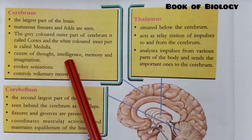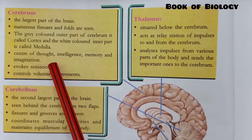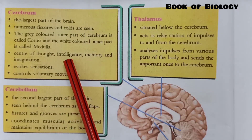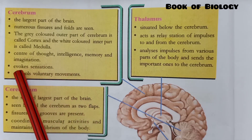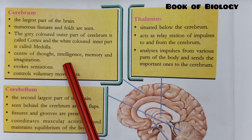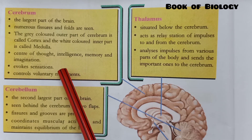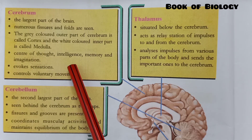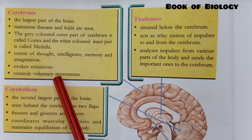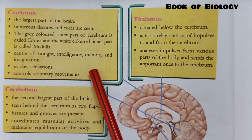The functions of the cerebrum include: it is the center of thought, intelligence, memory, and imagination. It helps to evoke sensations — we have different sensations like taste, touch, and smell, all of which are under the control of the cerebrum.